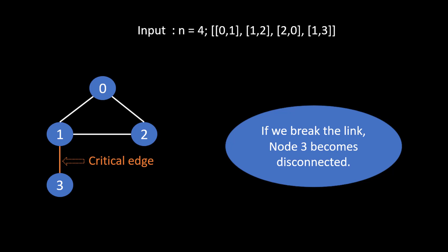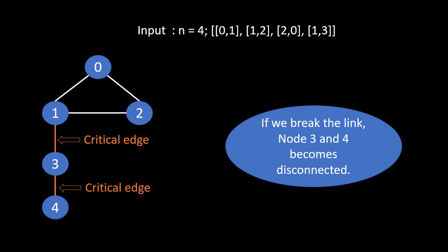This becomes a critical connection that we need to return. If there were one more edge connected from 3 to 4, we cannot remove that connection either, because it is also a critical edge — it is only connected to one server, and removing it would disconnect either 3 or 4 from the entire connection network.